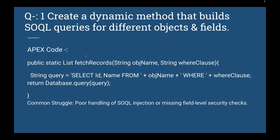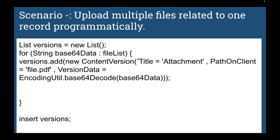The next question is: upload multiple files related to one record programmatically. In Salesforce we have attachments, but to do it programmatically you take a list of ContentVersion records, set the base64 data, VersionTitle, PathOnClient as PDF, and VersionData using base64 decode. Then insert the ContentVersion records. That's how you can upload multiple files related to one record programmatically.